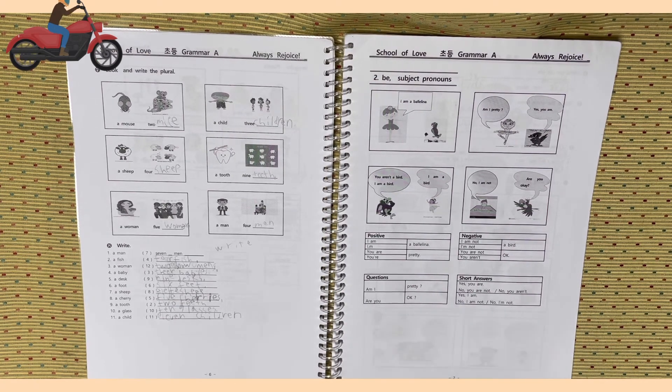Write a man, 일곱 명이면 seven men 이런 식으로 써주면 됩니다. 복수형을 써주면 됩니다. Number two, a fish, three. A woman, four. A baby, five. A desk, six. A foot, seven. A sheep, eight. A cherry, nine. A tooth, ten. A glass, eleven. A child.